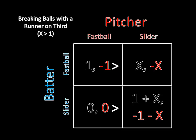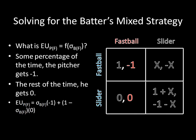I'm actually much more interested in the case where X is less than one. In this case there is no strictly dominated strategy, so it requires solving for a mixed strategy Nash equilibrium — there is no pure strategy Nash equilibrium when X is less than one.